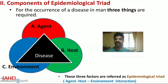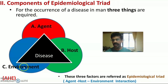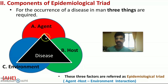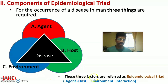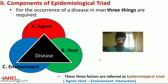The components of the Epidemiological Triad: for the occurrence of any disease in a human being, three things are required — agent, host, and environment. Agent is the external, pathogenic cause of disease. Host is the human being or animal that harbors the microorganism and may manifest signs and symptoms of the disease. Environment is the surrounding conditions that allow disease transmission.